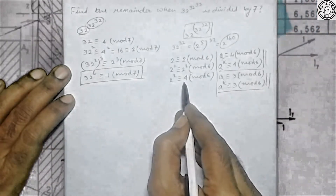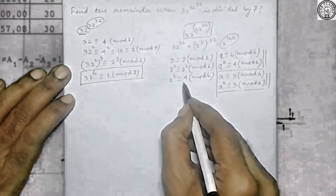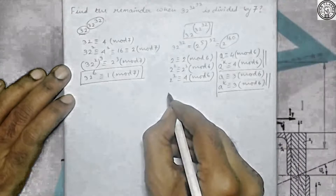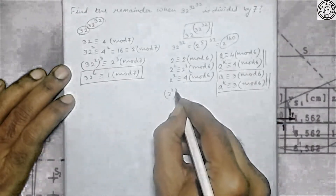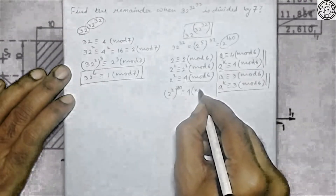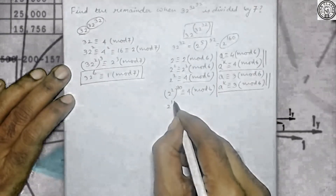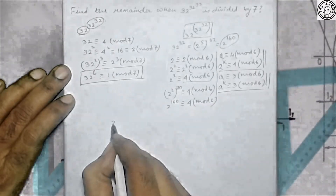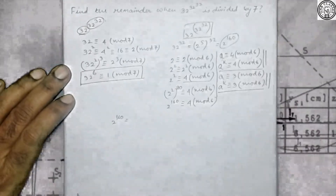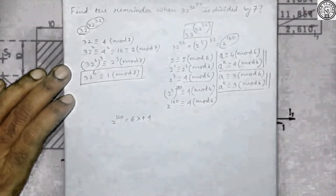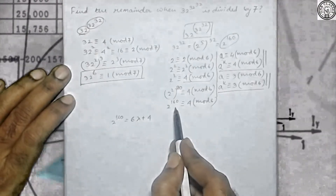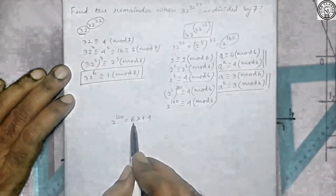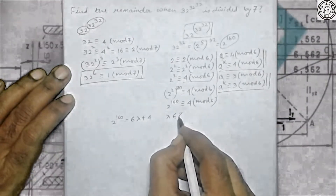Since 2 squared ≡ 4 (mod 6), we can raise its power to anything and the remainder will stay 4. Raising to the power 80: still 4 modulo 6. So 2^160 ≡ 4 (mod 6). Therefore, 2^160 can be written as 6λ + 4, where λ is any integer, because when 2^160 is divided by 6, the remainder is 4.